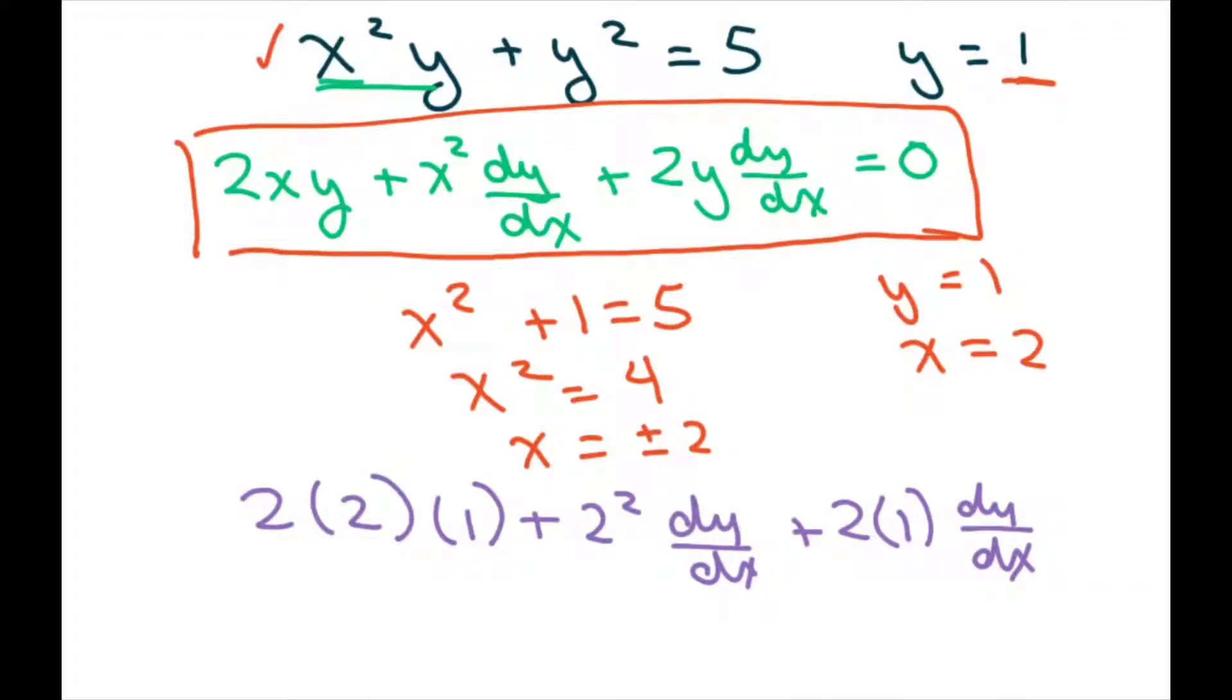So we're going to solve for this. This is 4 + 4 dy/dx plus 2 dy/dx, set this to 0. So you're going to get this is 6. So 4 + 6 dy/dx = 0. And to solve for dy/dx, you get 6 dy/dx = -4. Divide both sides by 6, so dy/dx is -4/6, which is -2/3.